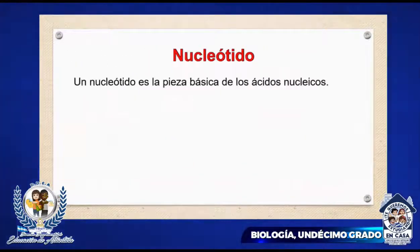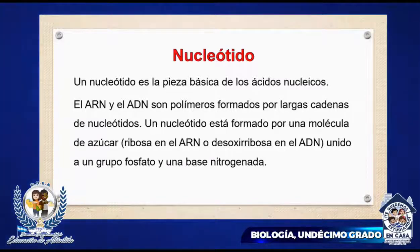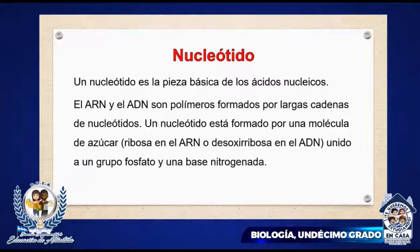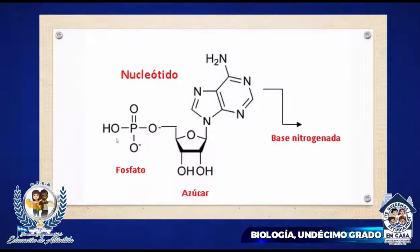Nucleótido. Un nucleótido es la pieza básica de los ácidos nucleicos. El ARN y el ADN son polímeros formados por largas cadenas de nucleótidos. Un nucleótido está formado por una molécula de azúcar —ribosa en el caso del ARN o desoxirribosa en el caso del ADN— unida a un grupo fosfato y una base nitrogenada. Aquí podemos observar cómo está formado un nucleótido: esta es la base nitrogenada, este es el azúcar y este es el grupo fosfato.